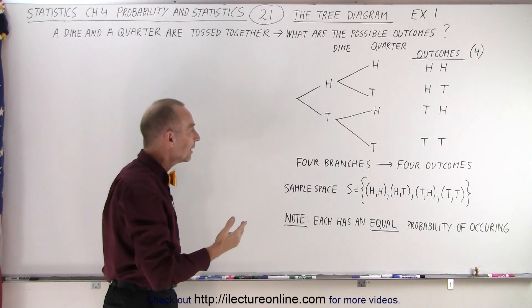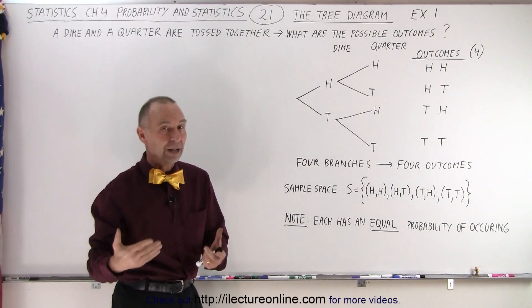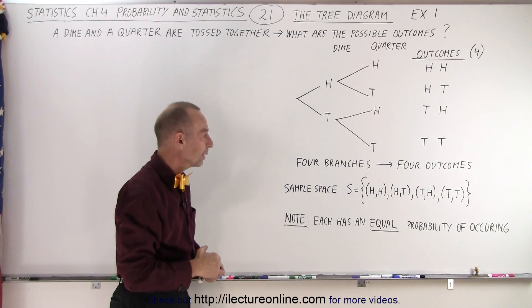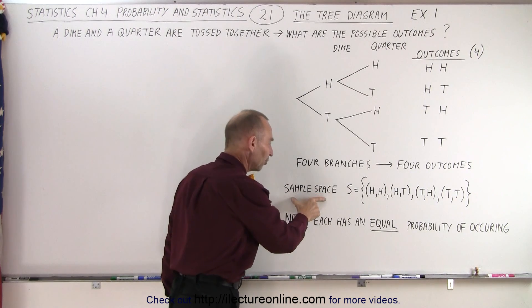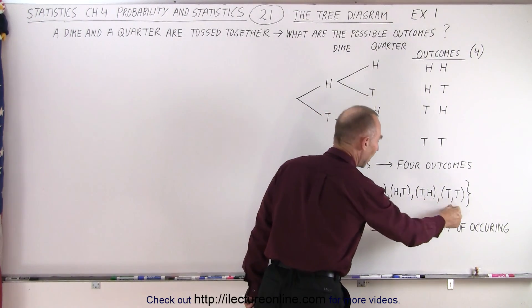We then indicate that there are four branches, and if there are four branches, there are four outcomes. We can also indicate the sample space. The sample space is these four possible outcomes.